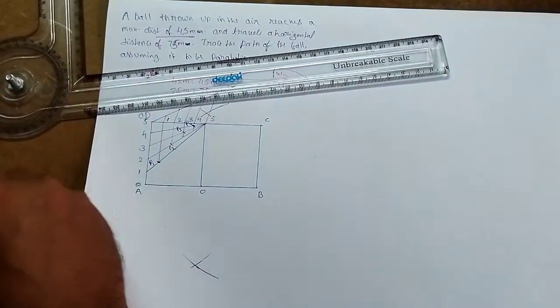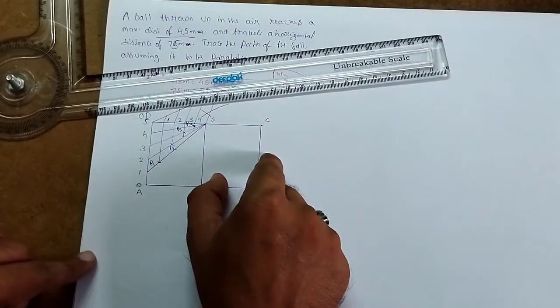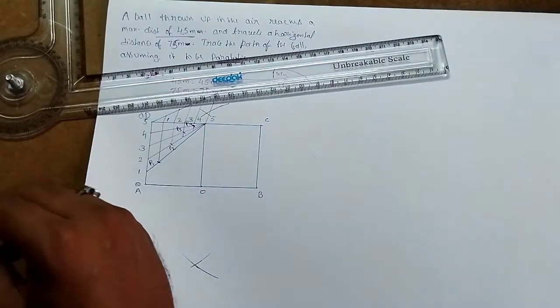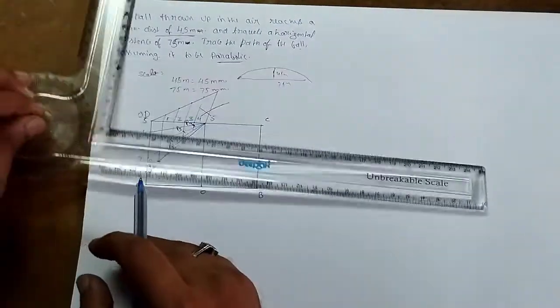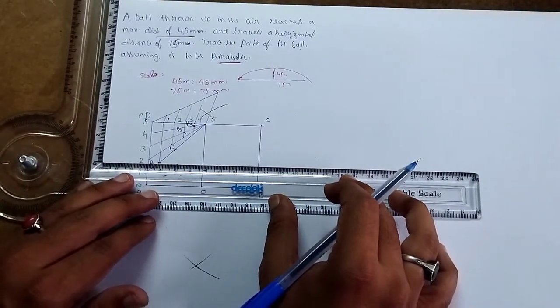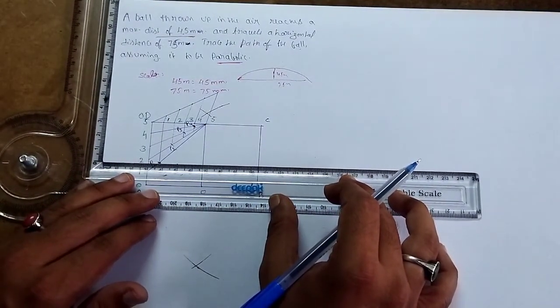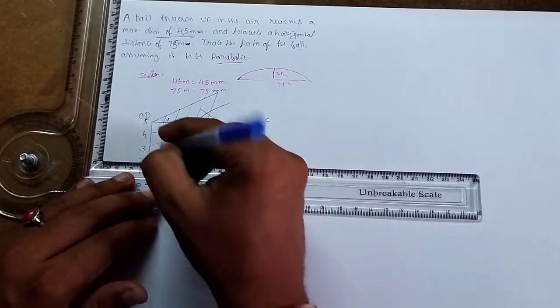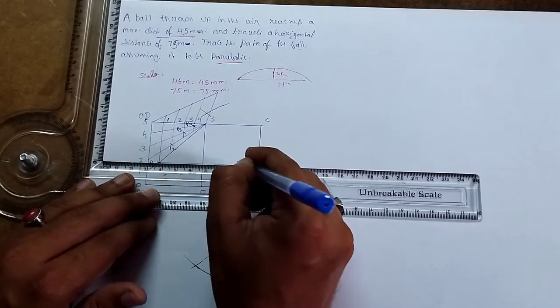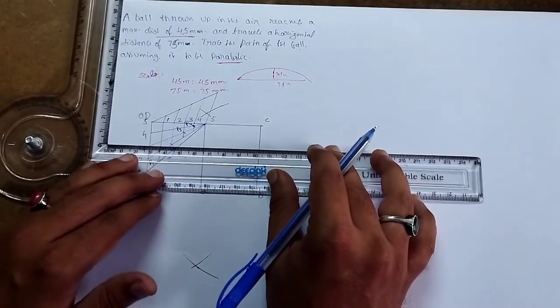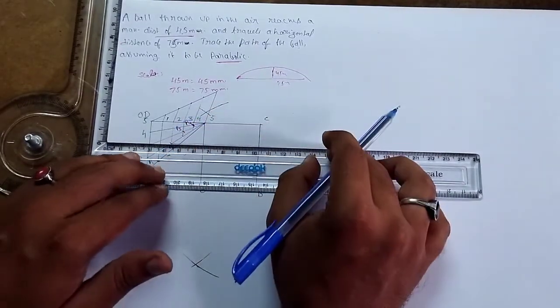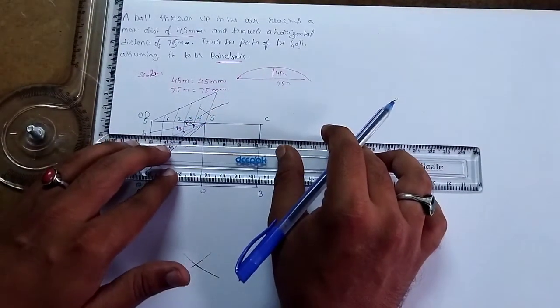Now do the same process on the right side. Draw horizontal lines to mirror the construction. Why? Because parabola, ellipse, hyperbola - all these are symmetric in nature. Number them 1, 2, 3, 4, 5.